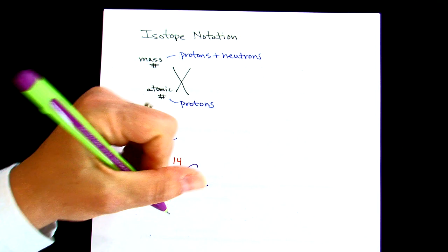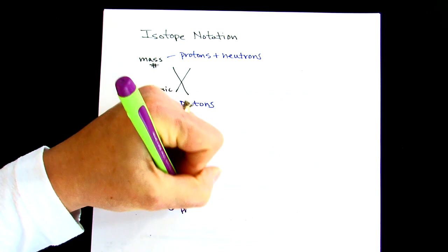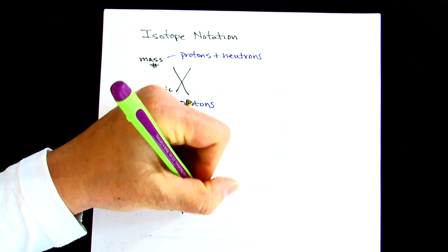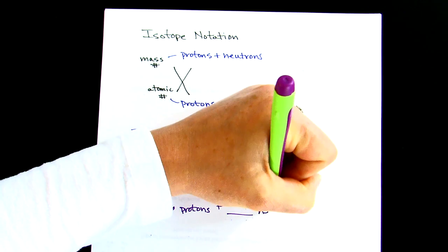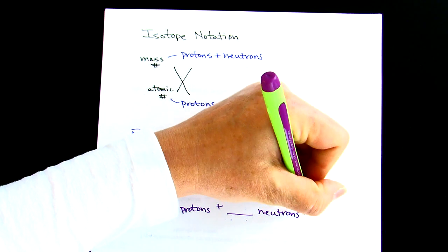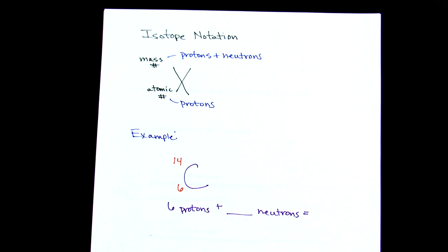So we know that there's six protons. So we've got six protons plus a certain amount of neutrons equals 14.